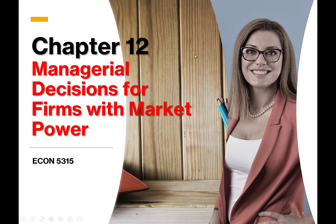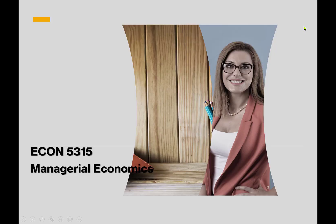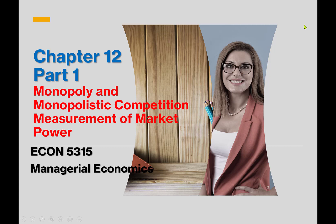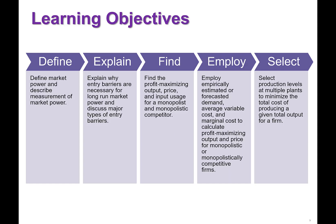Hello everyone, this is Chapter 12: Managerial Decisions for Firms with Market Power. In Part One we'll learn about monopoly and monopolistic competition and measurement of market power. The general chapter objectives include defining market power and describing how to measure it.